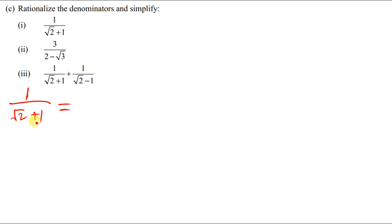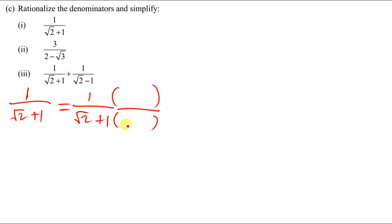The conjugate is found by changing the sign in between. So if you have a plus there, you put a minus. We're going to multiply both the numerator and the denominator by the conjugate of the denominator. So we have root 2, and instead of plus we put minus, giving us root 2 minus 1.